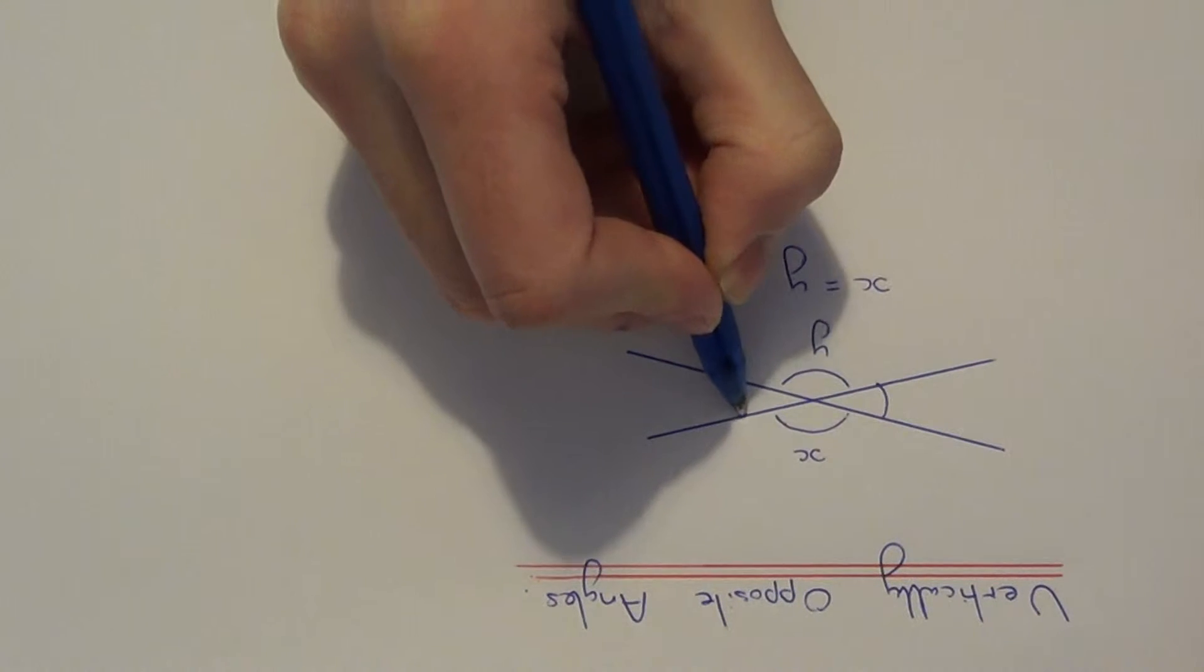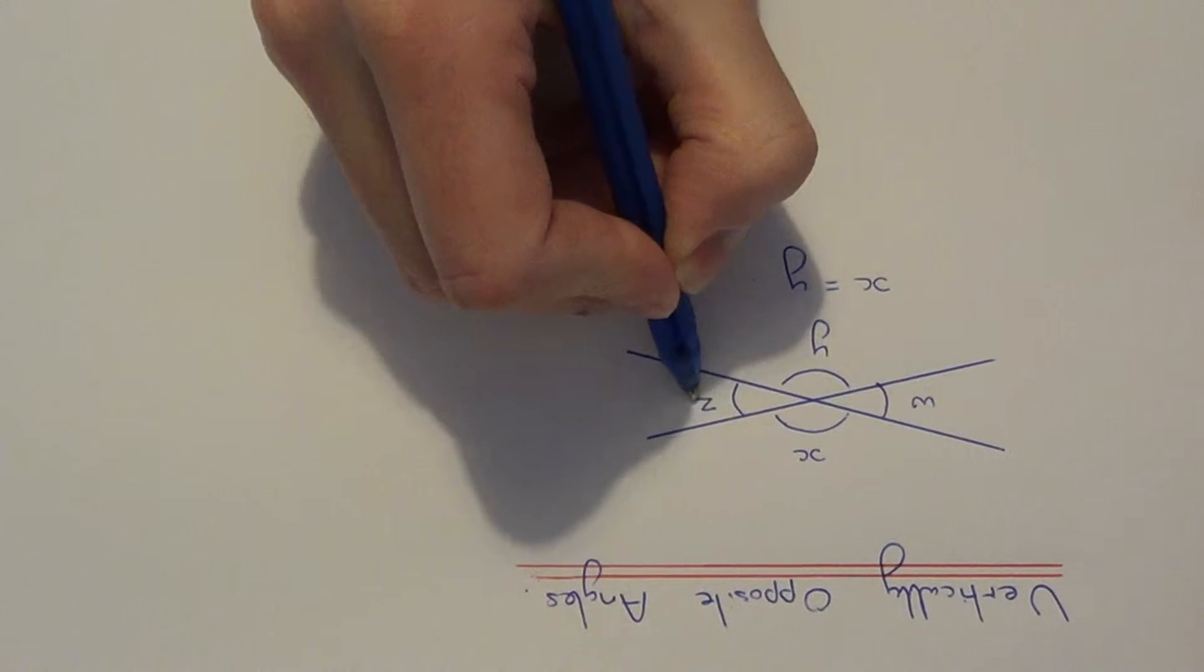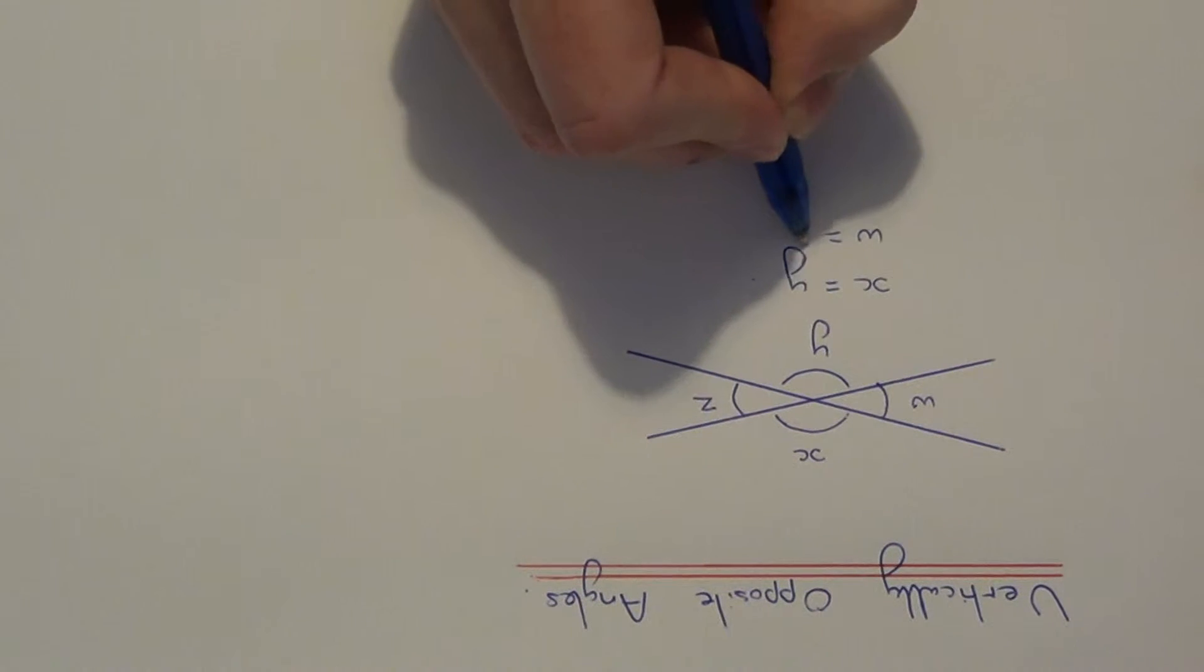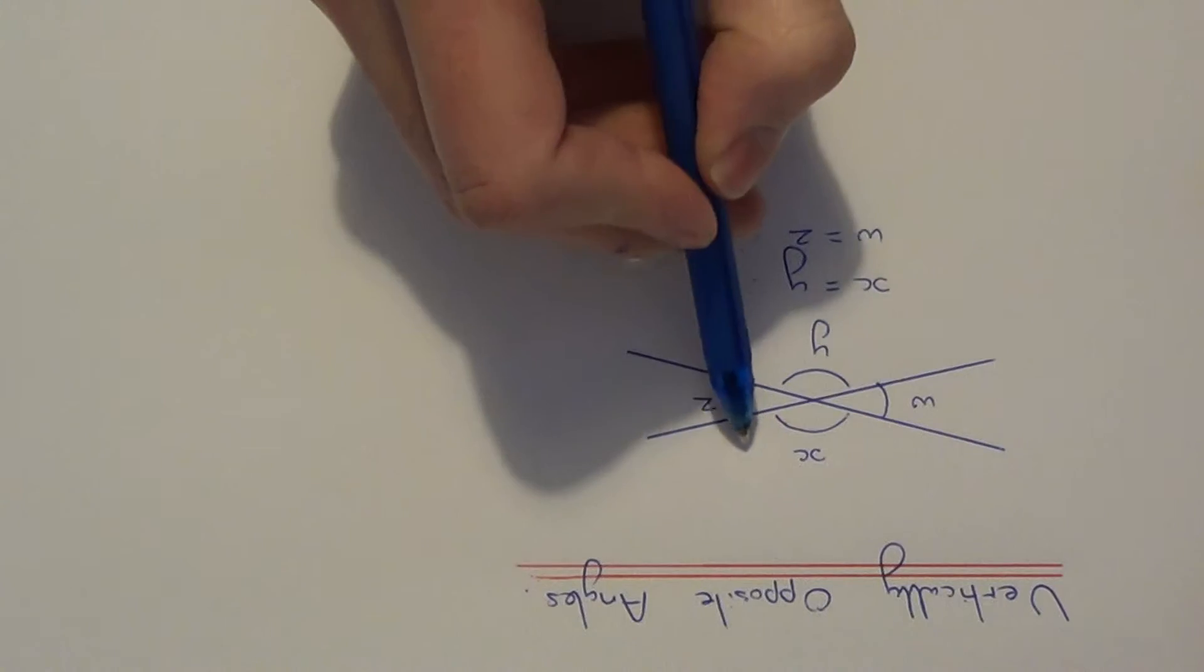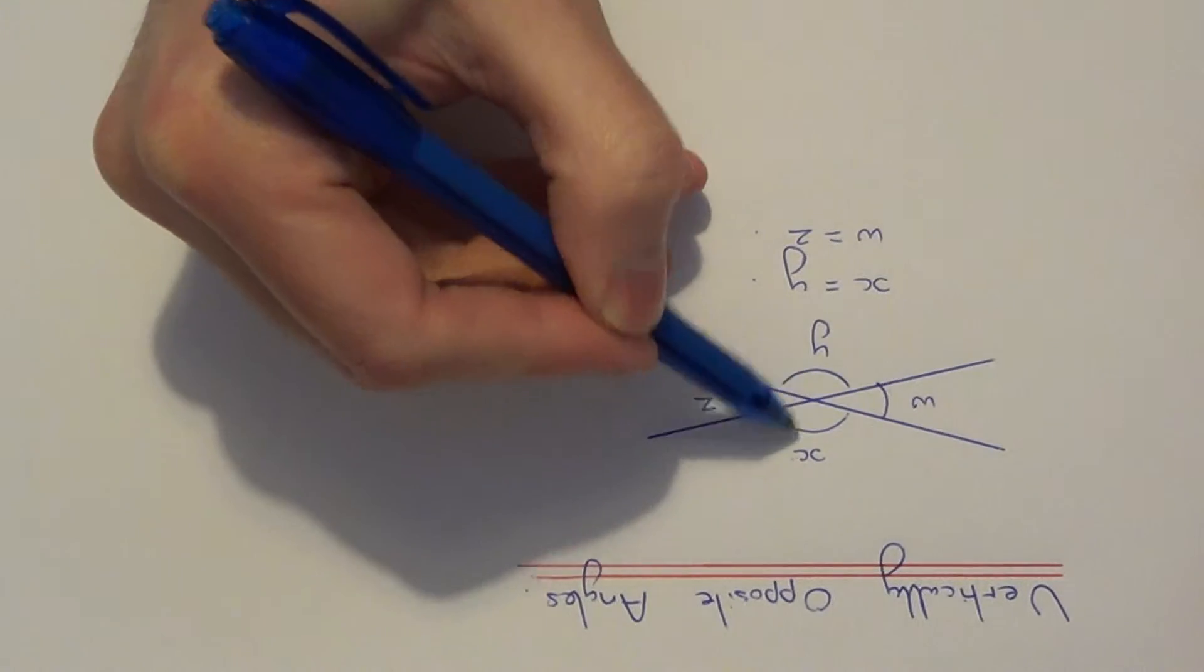Likewise, these two here, these two angles will also be the same. These type of angles are called vertically opposite angles.